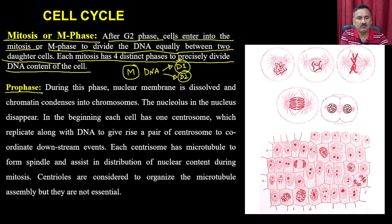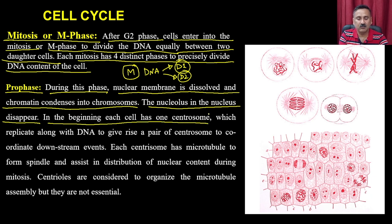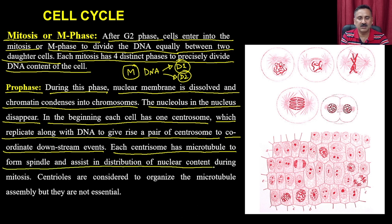The first phase of mitosis is prophase. During prophase, the nuclear membrane dissolves and chromatin condenses into chromosomes. The nucleolus in the nucleus disappears. Each cell has one centrosome which replicates along with the DNA to give rise to a pair of centrosomes to coordinate downstream events.